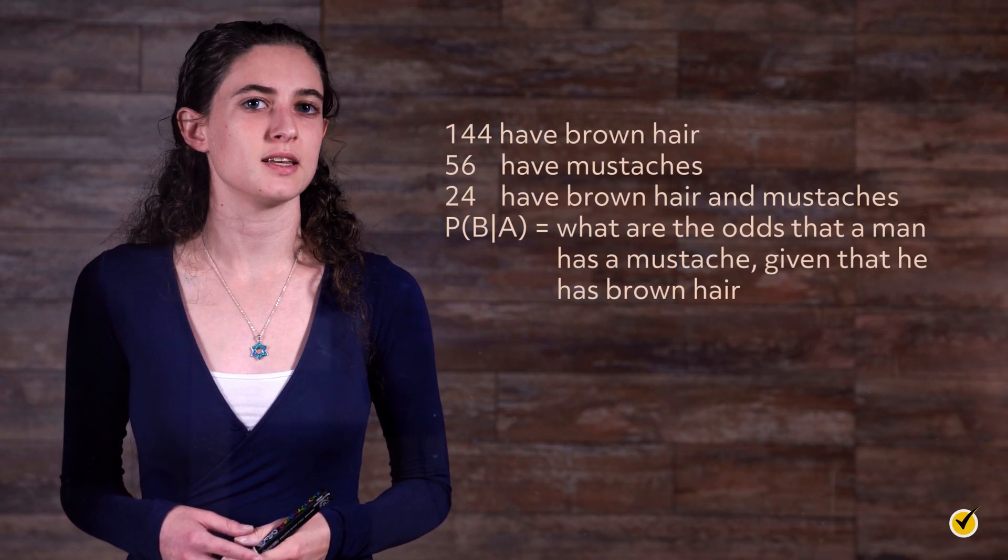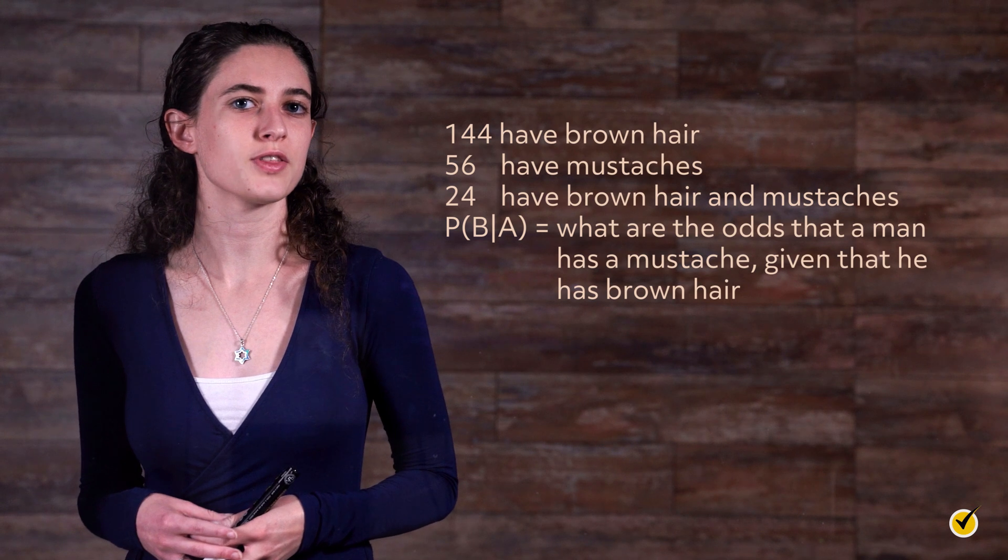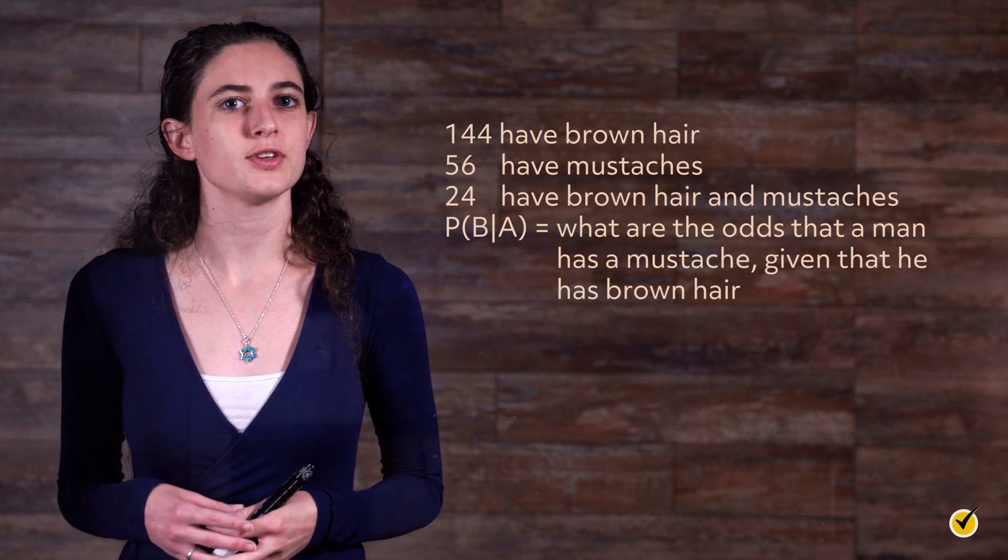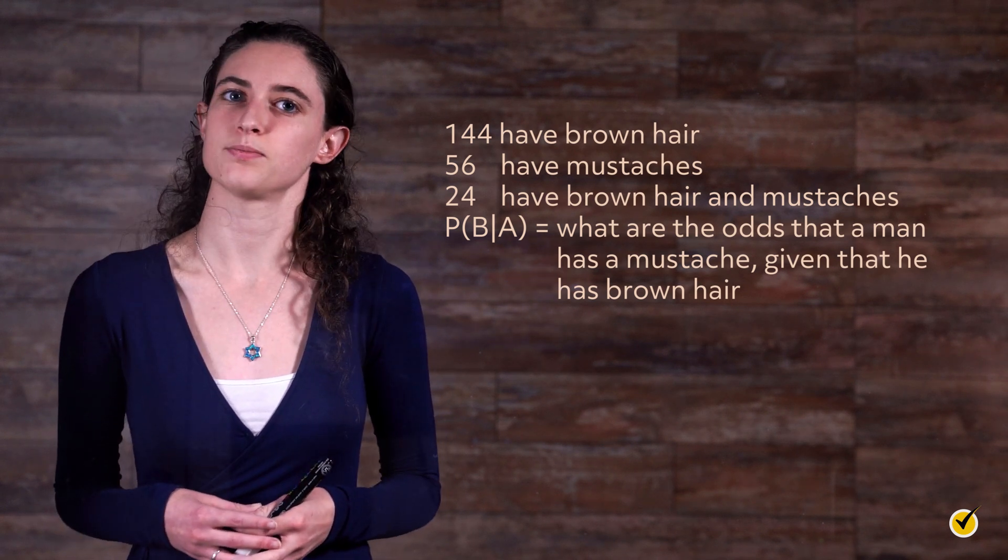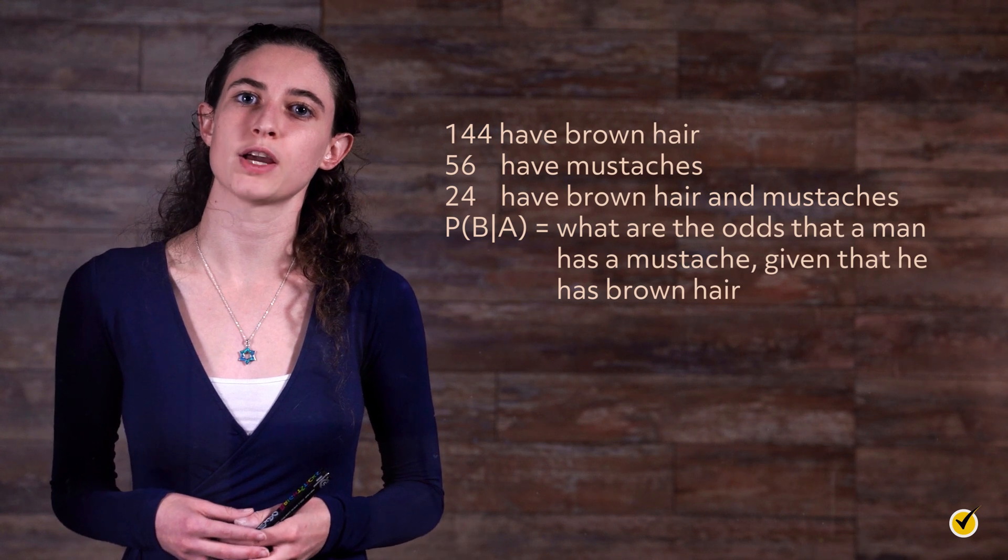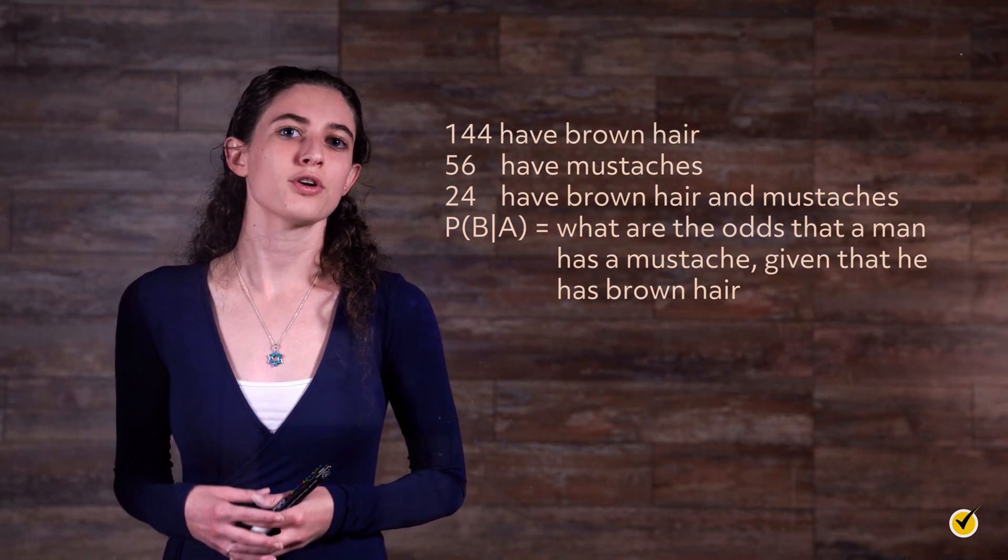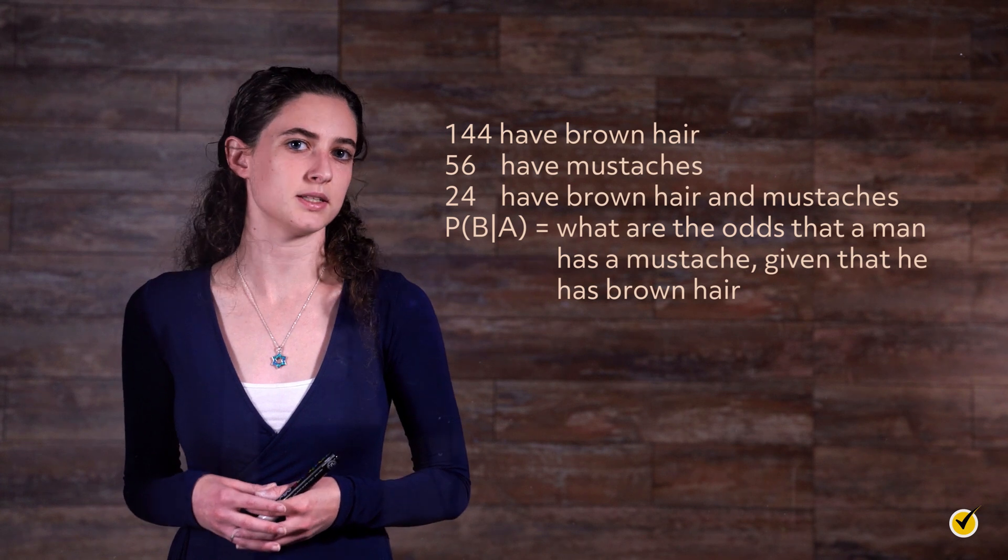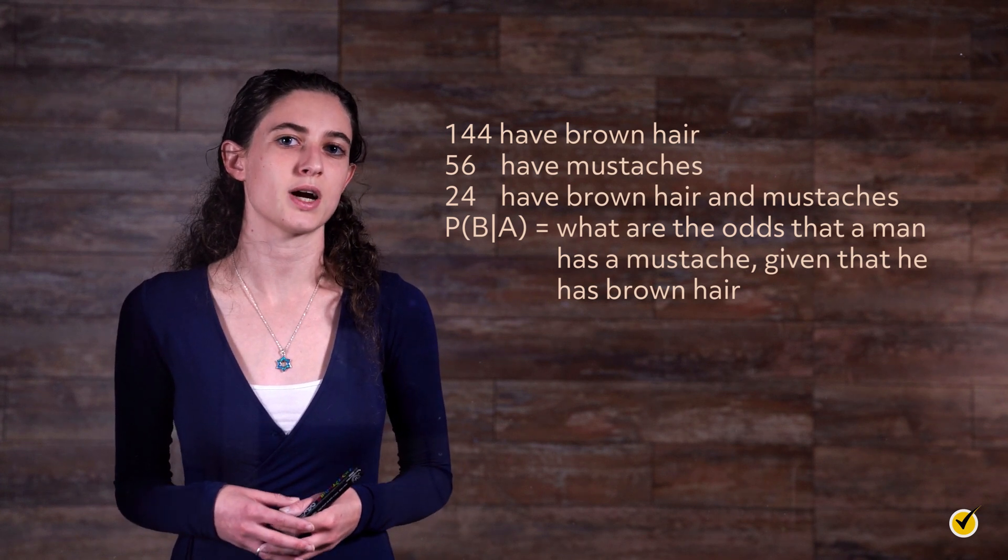Let's try one more with numbers that aren't quite so neat. In a small town, there are 216 men. 144 of them have brown hair, and 56 of them have mustaches. 24 of the men have brown hair and mustaches. What are the odds that a man chosen at random has a mustache given that he has brown hair? Let's plug into our formula.